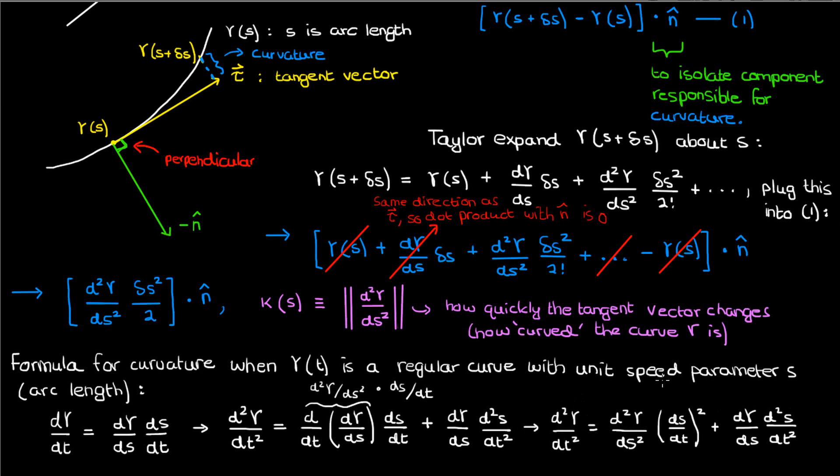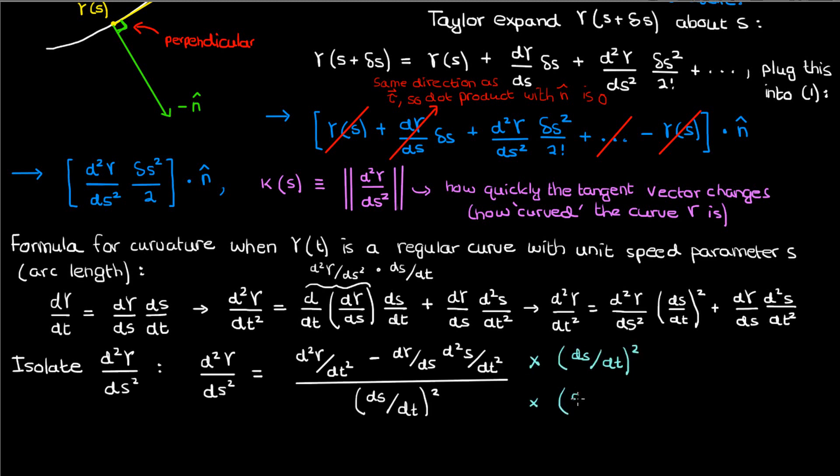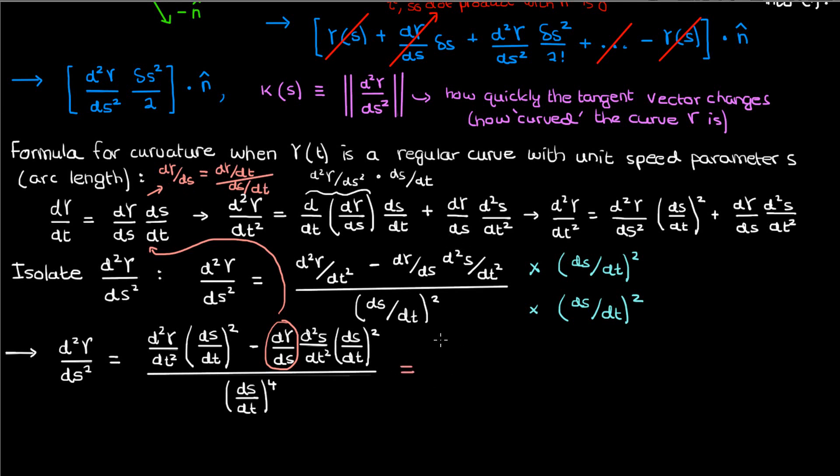Now this second derivative with respect to s is related directly to κ, we just have to take its magnitude to get our curvature. Before we do that though, let's isolate d² gamma by ds² in which case we'll get the following. We'll multiply both numerator and denominator by ds by dt whole squared, and here's what we'll get. Now the d gamma by ds term can be converted to a derivative in terms of time by using the equation we had up here for d gamma by dt. From this equation d gamma by ds is just d gamma by dt over ds by dt. When we make the substitution down below, here's what we end up with.